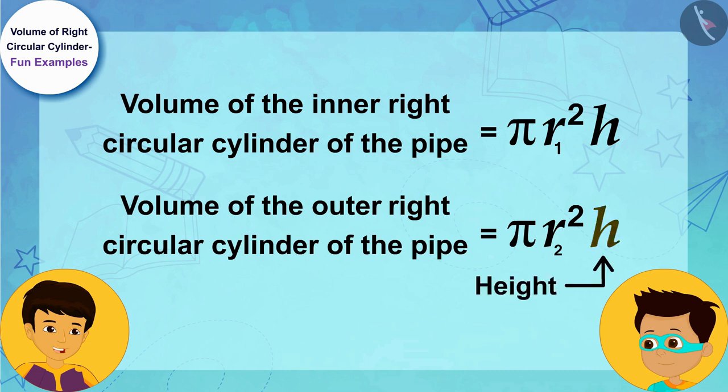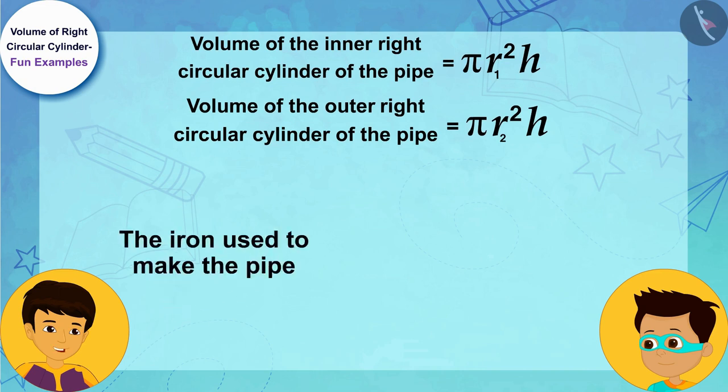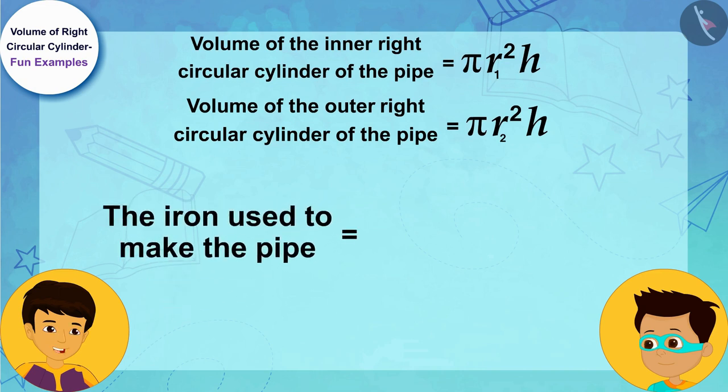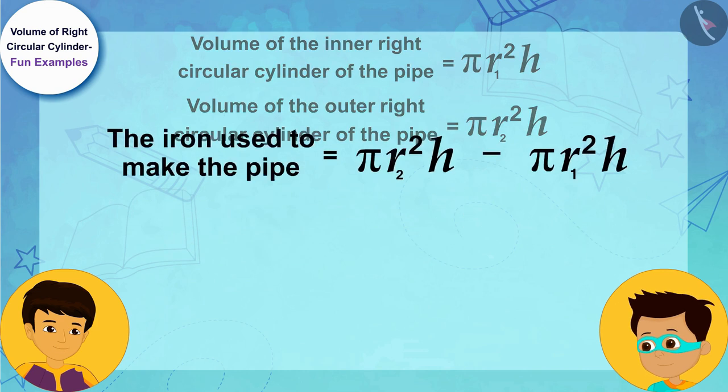As I told you earlier, the iron used to make the pipe is equal to the difference between the volumes of its outer and inner right circular cylinders. The diameter of the inner right circular cylinder part of the pipe is 2 centimeters, that is, its radius will be 1 centimeter.